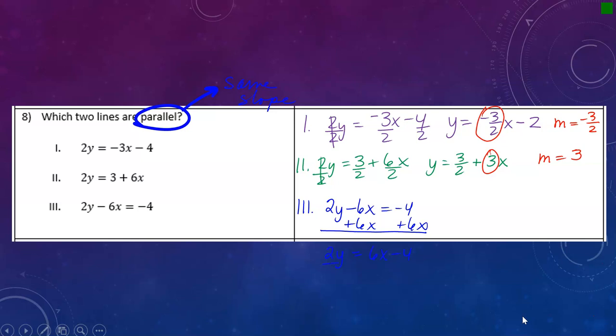Now I'm going to divide everything by 2. My final equation would be y equals 3x minus 2. I'm looking at the number in front of x, so the slope is 3.